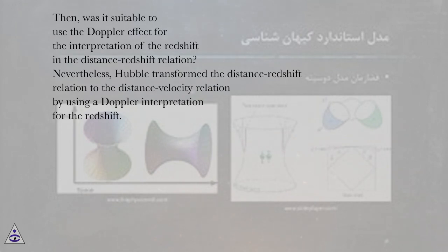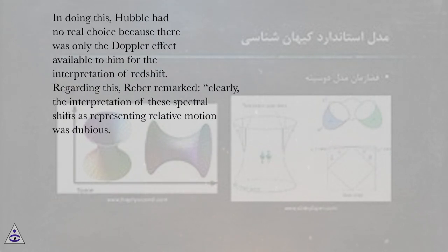Nevertheless, Hubble transformed the distance-redshift relation to the distance-velocity relation by using a Doppler interpretation for the redshift. In doing this, Hubble had no real choice because there was only the Doppler effect available to him for the interpretation of redshift.